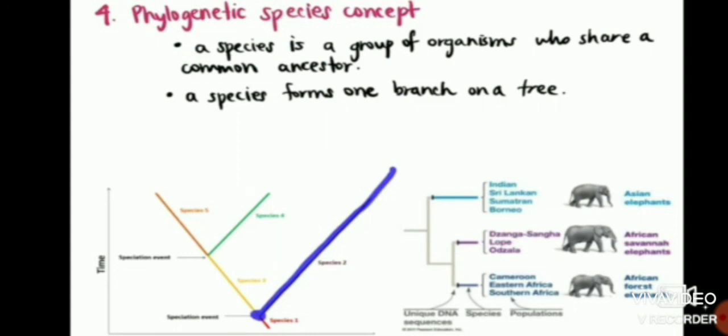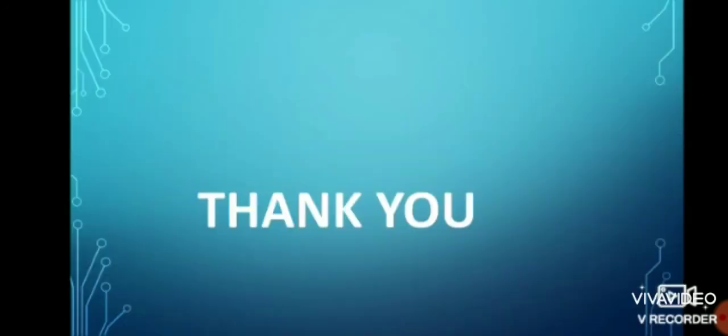Phylogenetic species concept: a species is a group of organisms that share a common ancestor, forming one branch on the tree of life. This covers the whole concept of species. Thanks for watching.